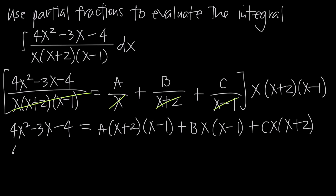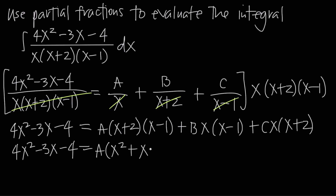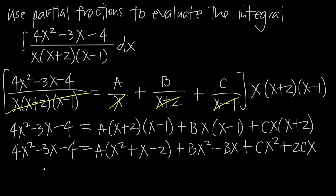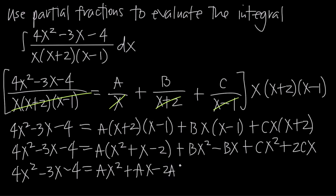Now we expand the right hand side. A times (x plus 2)(x minus 1) gives x squared plus x minus 2. Distributing the A gives Ax squared plus Ax minus 2A. Distributing Bx across (x minus 1) gives Bx squared minus Bx. And distributing C gives Cx squared plus 2Cx.